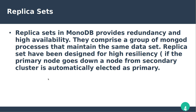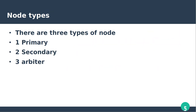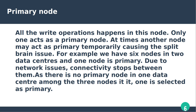Nodes are of three types in MongoDB: primary, secondary, and arbiter. The primary node is the only member in the replica set that receives write operations — all write operations happen on this node only. There is only one active primary node at any given time.